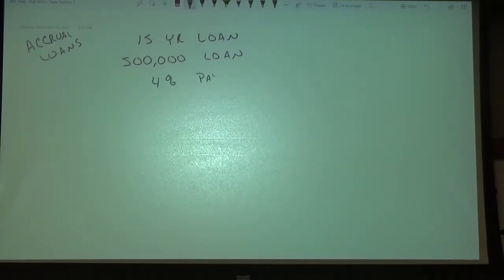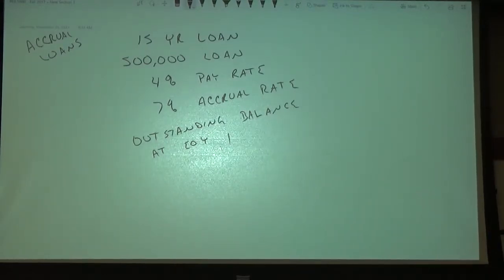We're going to have a pay rate of 4% and an accrual rate of 7%, and what I'm going to want you to do is calculate the outstanding balance at the end of year one. Think about what this is. If you're paying 4% interest but the interest is accruing at 7%, that means your asset is going to have negative amortization.